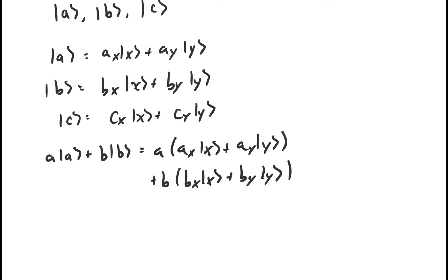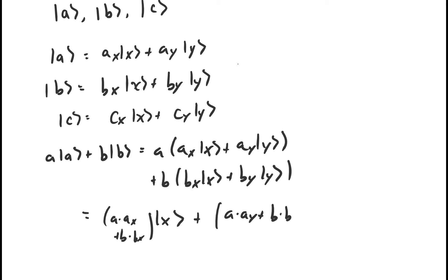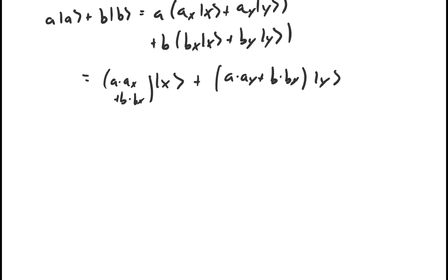We find that the coefficient in front of the vector x is going to be α times a_x plus β times b_x, and the coefficient in front of the vector y is going to be α times a_y plus β times b_y. So we've just shown that a linear combination of the vectors a and b is actually a linear combination of the vectors x and y. We've almost shown how to express vector c as a linear combination of a and b — we know how to express c as a linear combination of x and y, and we know how a linear combination of a and b transforms into a linear combination of x and y.